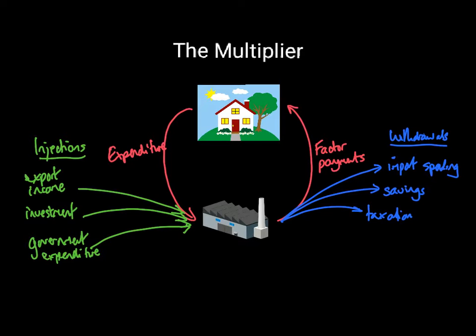The multiplier effect was the idea put forward by Keynes. What he suggested was that these injections and withdrawals will actually have a bigger impact on the overall economy than just the size of the injection or the withdrawal. That was this idea of multiplying up the scale of the impact on the economy, so that it's more than just the size of the injection or the withdrawal. To give a little bit of an example about how that may actually work, we're going to imagine starting with government expenditure.